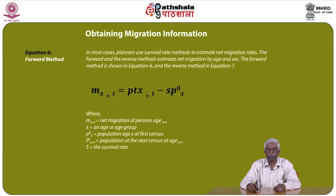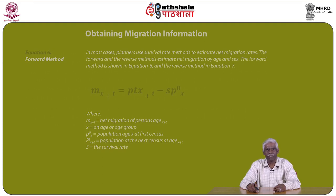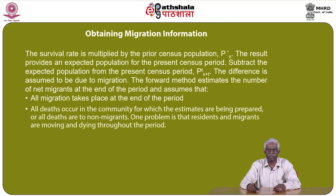The forward and reverse methods estimate net migration by age and sex. The equation for the forward method is: M(x+t) = P(t, x+t) − S × P(0, x), where M(x+t) is net migration of persons at age x+t, P(0, x) is the population at the first census, P(t, x+t) is the population at the next census at age x+t, and S is the survival rate. The survival rate is multiplied by the prior census population to produce an expected population. Subtract the expected population from the present census figure; the difference is assumed to be due to migration. The forward method estimates net migrants at the end of the period, assuming all migration takes place at the end of the period and all deaths occur in the community as non-migrants.